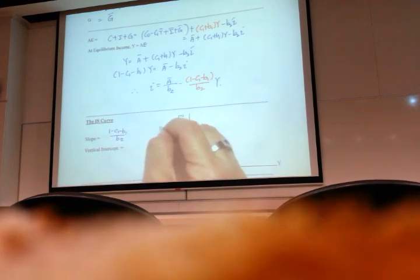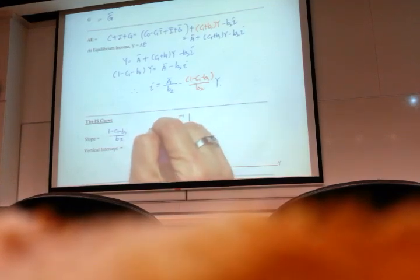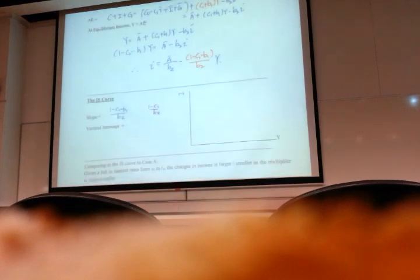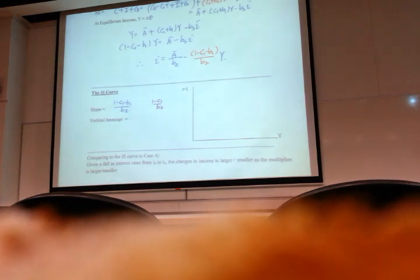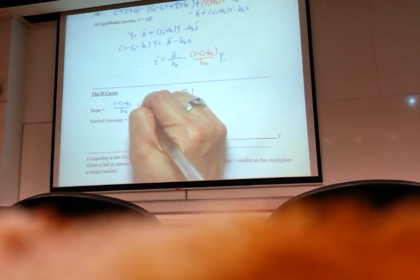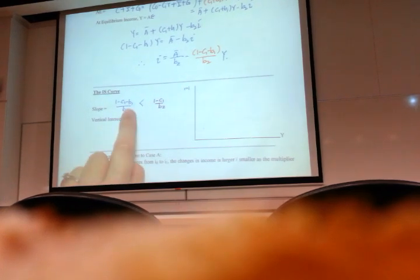Now if you want to compare to the case A's slope, case A, the slope was 1 minus C1 over B2. This was the earlier slope that we saw in page 12. So you can see with the presence of your B1, the line is actually flatter because you can see the numerator, you actually minus another value. So the slope for case B is smaller.